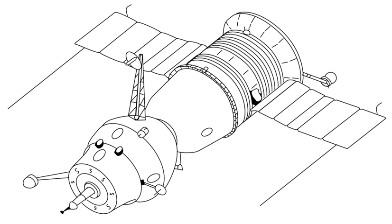The docking mechanisms of 7KOK and 7K LOC did not allow internal transfer - this feature was added on the 7KOKS version. Thus cosmonauts had to spacewalk between docked modules. This procedure was conducted successfully on the joint Soyuz 4 and Soyuz 5 missions, where Alexei Yelizeyev and Yevgeny Khrunov transferred from their Soyuz 5 to the Soyuz 4 craft.